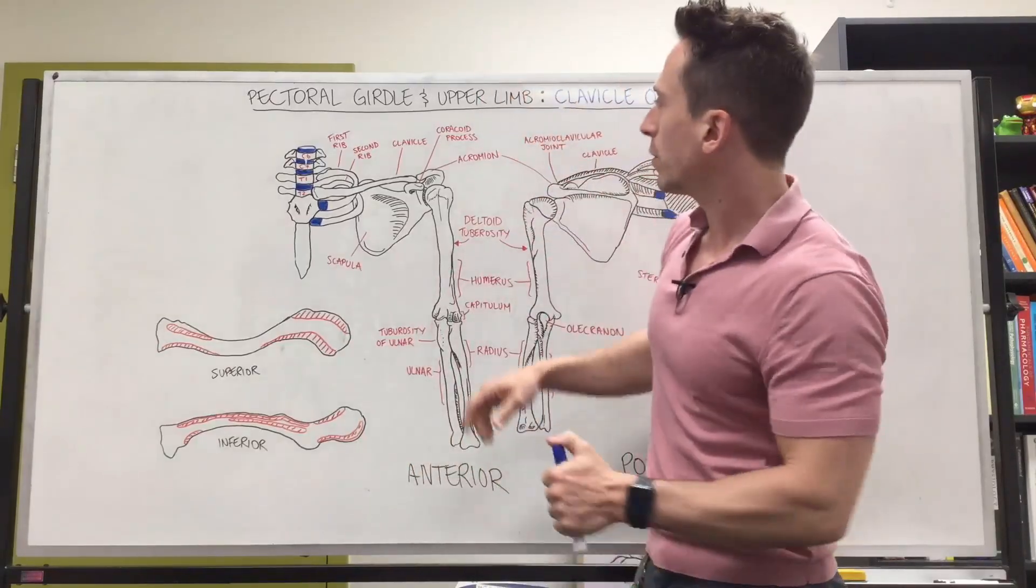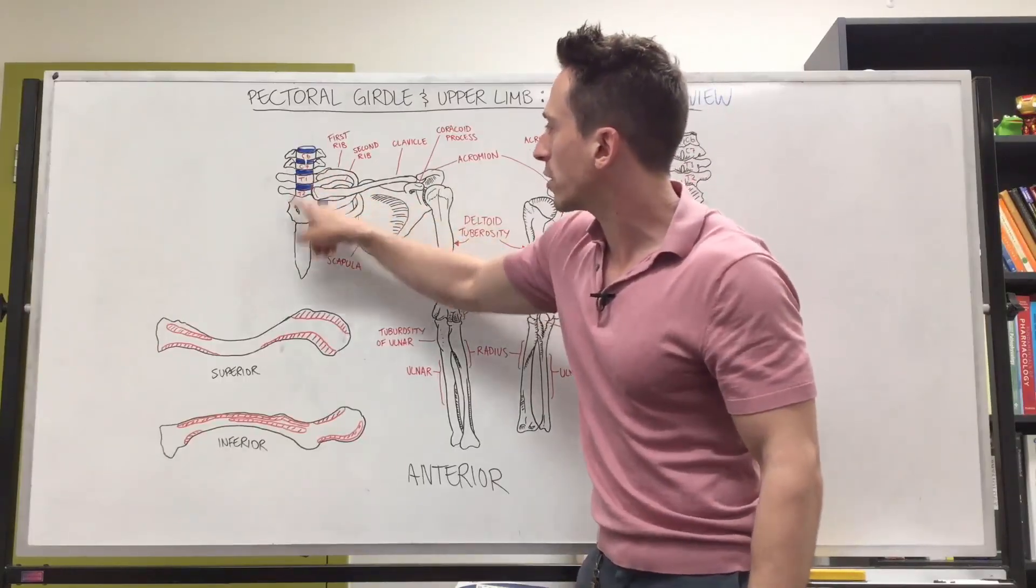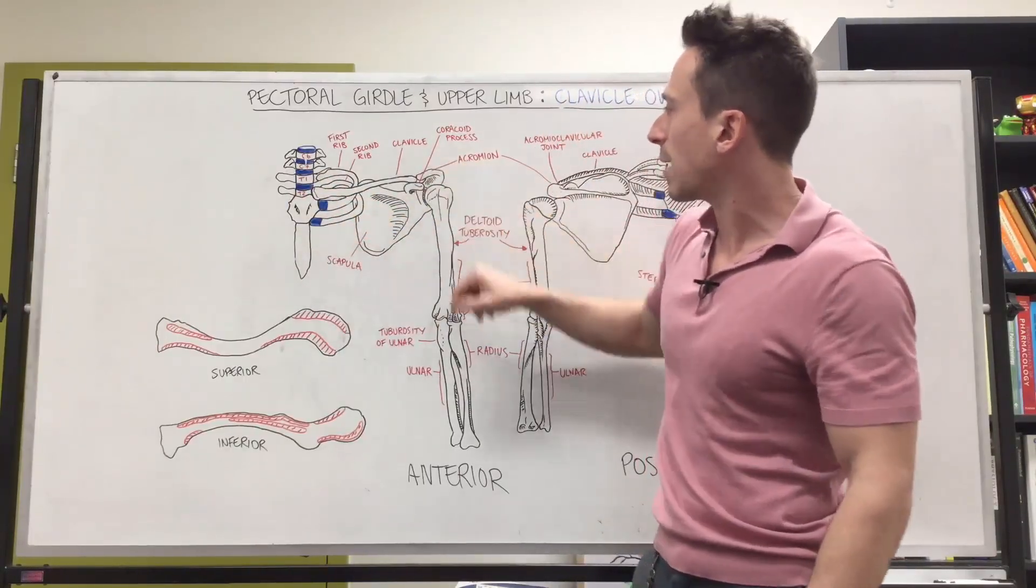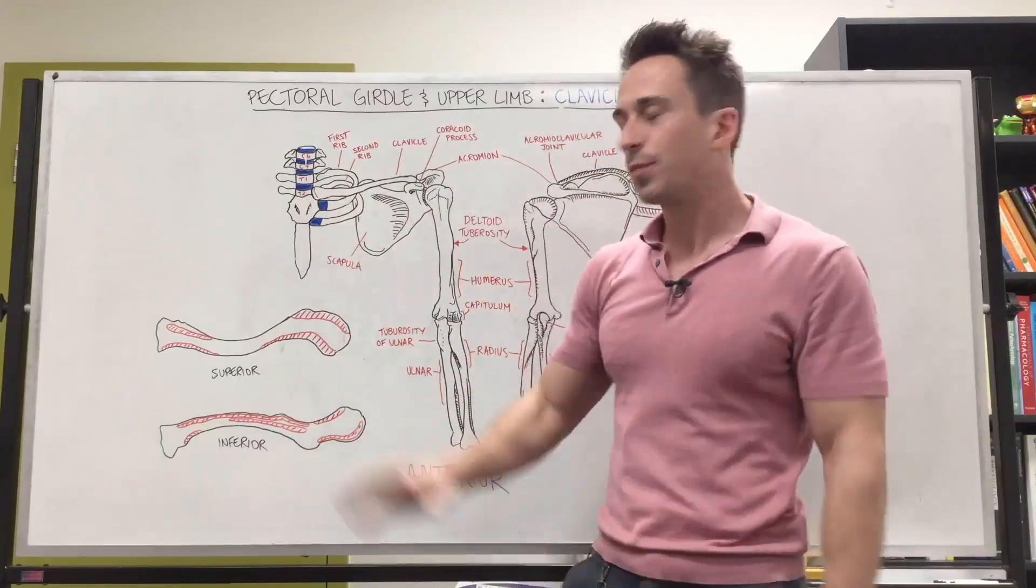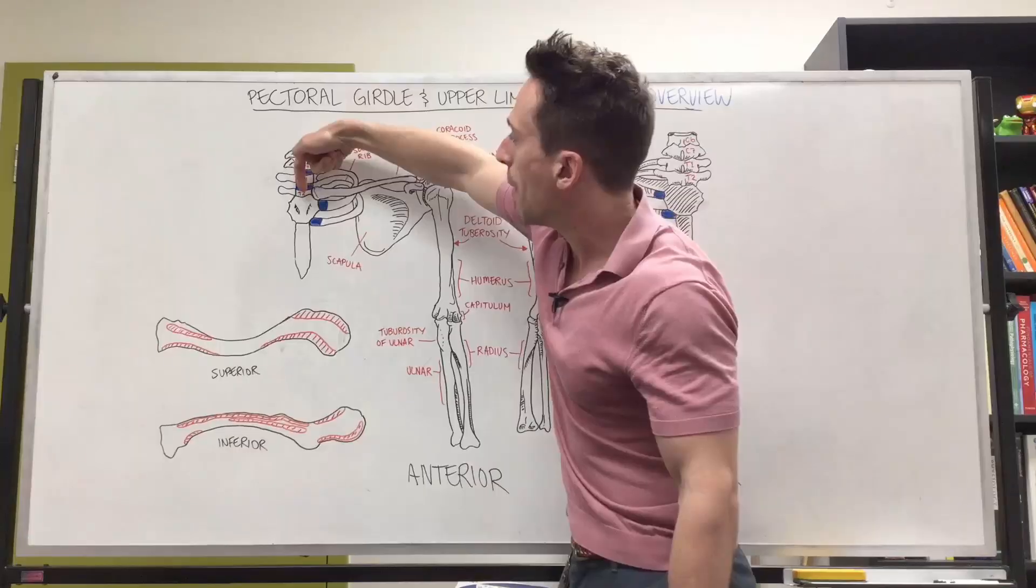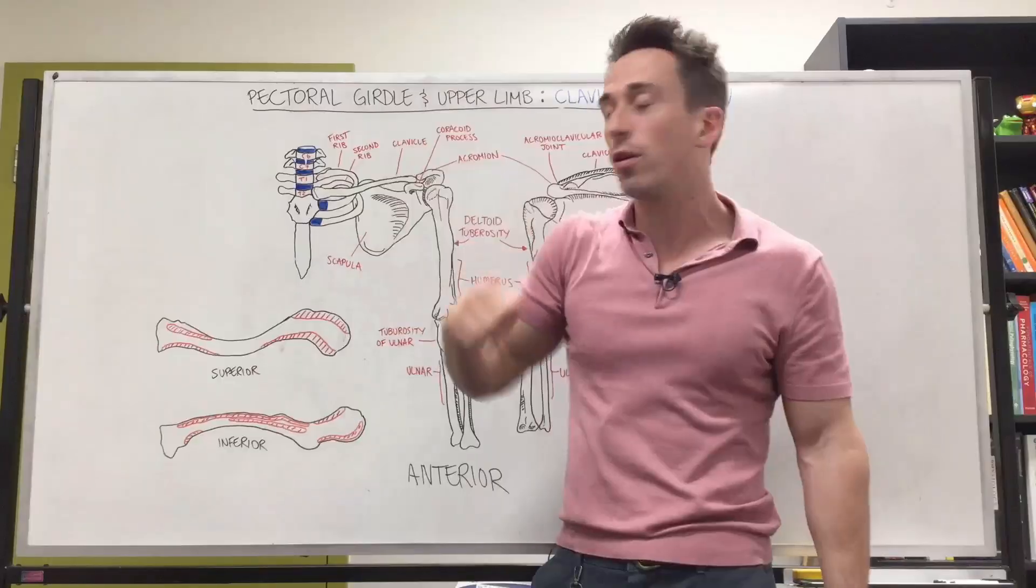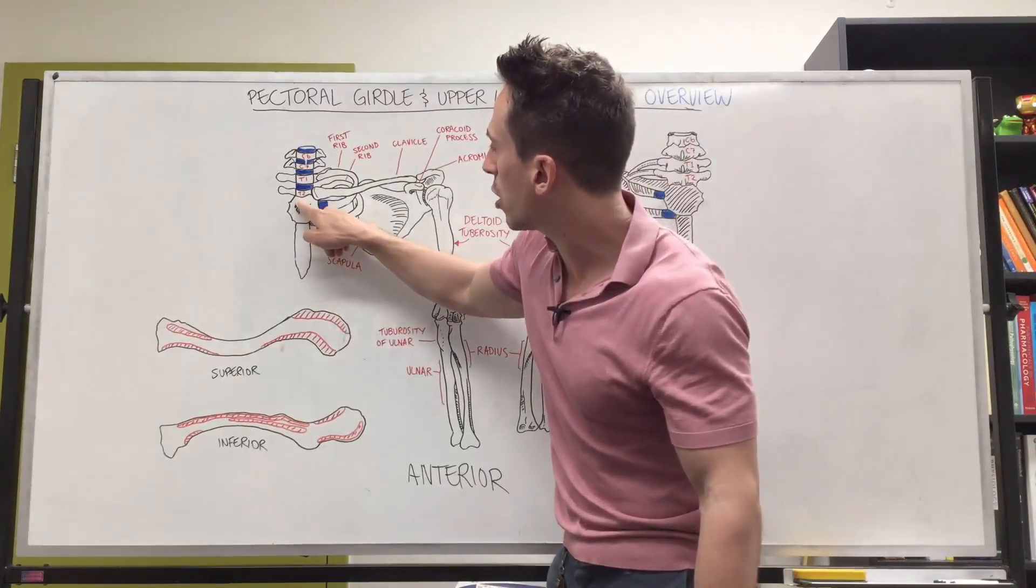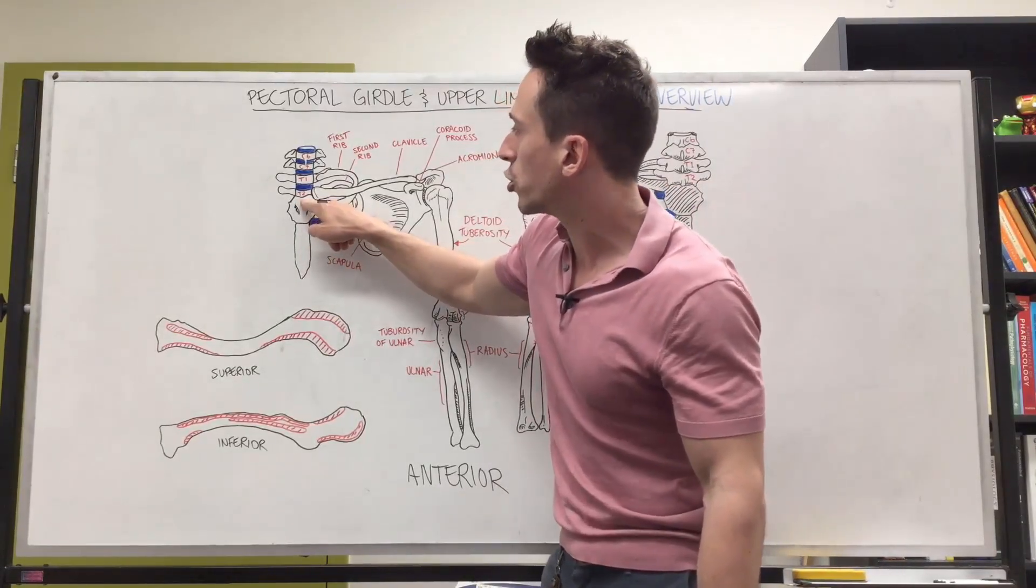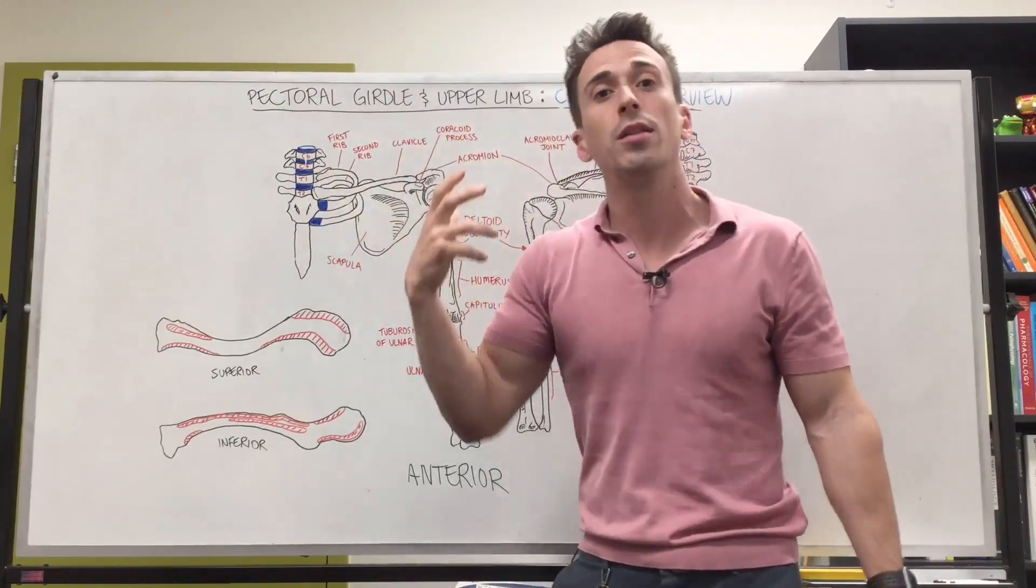Now if we were to have a look more specifically at how the clavicle articulates here at the sternum and here at the scapula, let's start at the sternum. So again, this is medially. What you'll find is the clavicle articulates with that manubrium sterni and it sits within a notch. So this looks like a little dugout area of the bone. You can see there's a notch at the top of the manubrium, and this is called the suprasternal notch, and the notch that the clavicle sits in is called the clavicular notch.